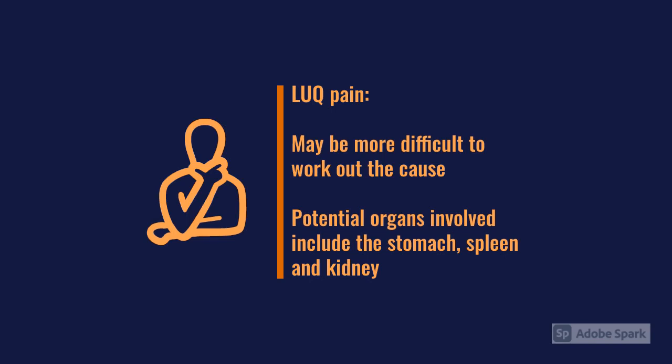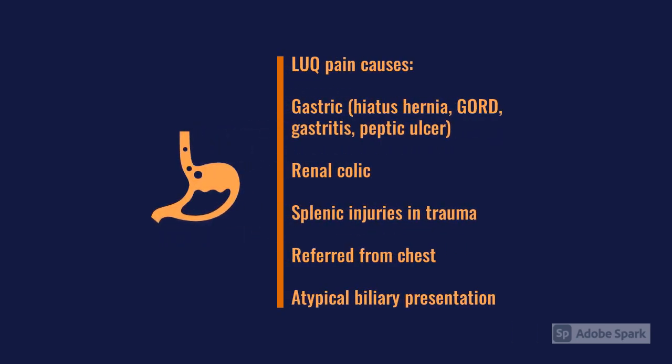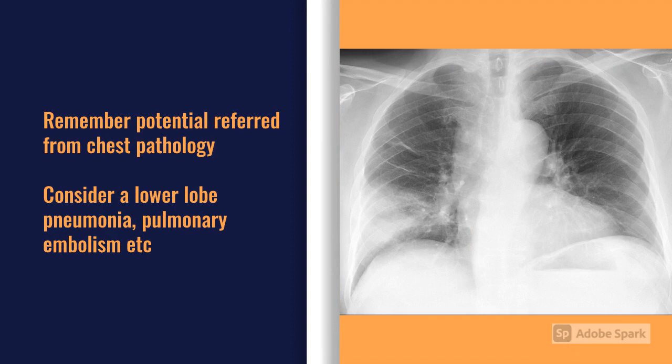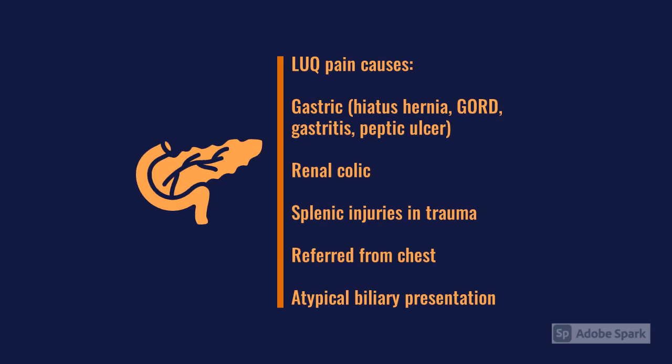The key organs in the left upper quadrant are the stomach, spleen, and kidney. We think about whether it's gastric-related — a hernia, reflux, gastritis, or peptic ulcer — or pain from renal colic. Splenic issues are rare unless in the context of trauma, though splenic infarcts can occur. Always consider referred pain from the chest, such as a lower lobe pneumonia or pleural effusion, and atypical presentations of pancreatitis or cholecystitis.